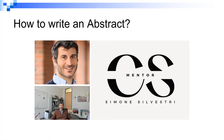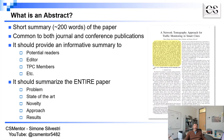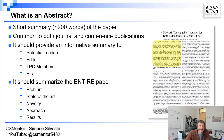Hello everyone, this is Simone Silvestri and welcome to another episode of CS Mentor. Today the topic I would like to cover is how to write an abstract, which is generally the first thing after the title that you need to write once you write a paper. So first of all, what is an abstract? The abstract, after the title and list of authors, is the first thing you encounter in a paper. Here is an example of a paper I published a few years ago, and you can see the abstract highlighted here in yellow.